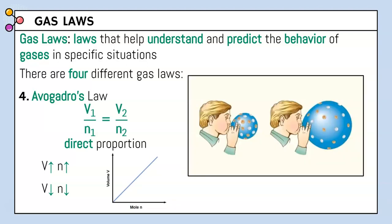A great example of Avogadro's Law is blowing up a balloon. The more air — the more moles — you put into a balloon, the bigger it gets. If you deflate a balloon and release the particles, the volume gets smaller.